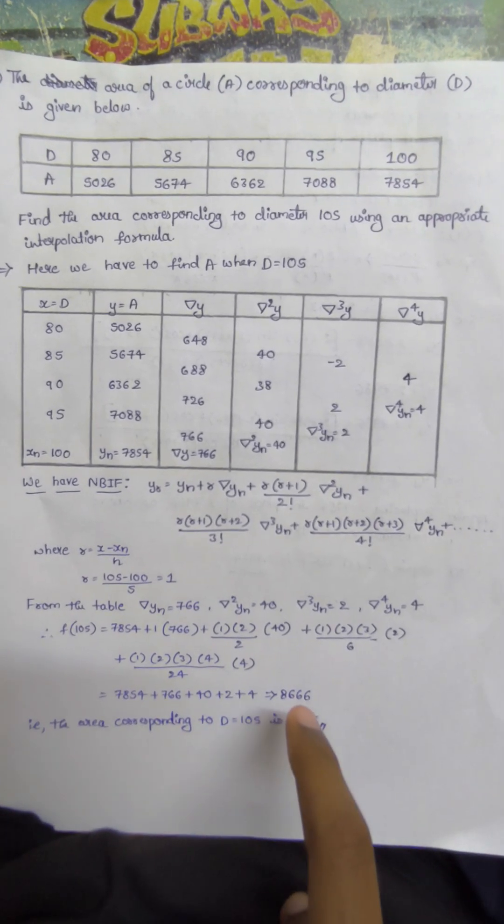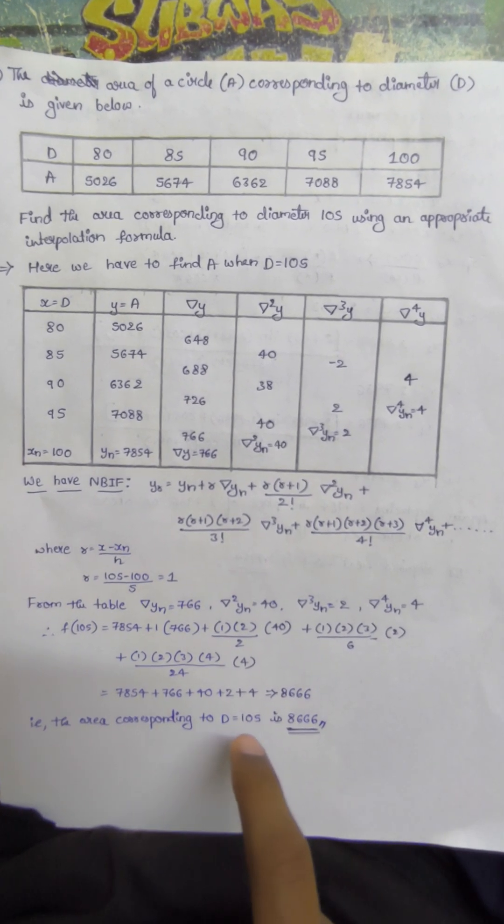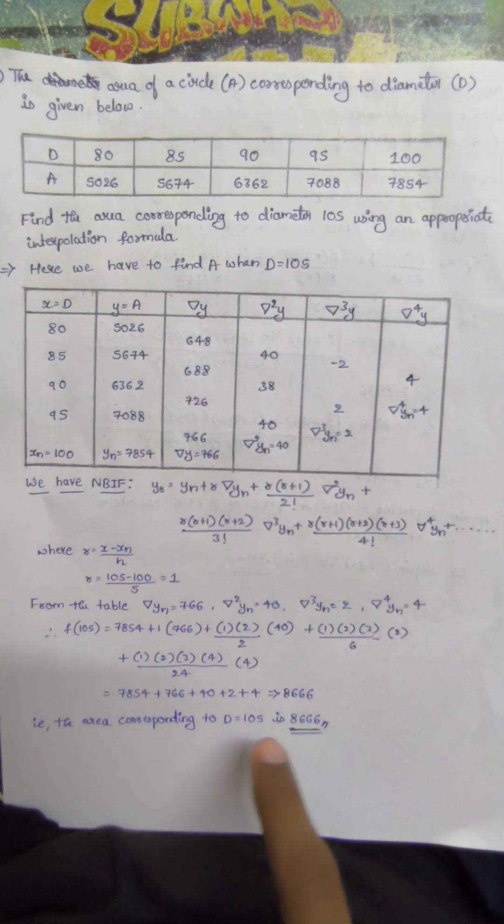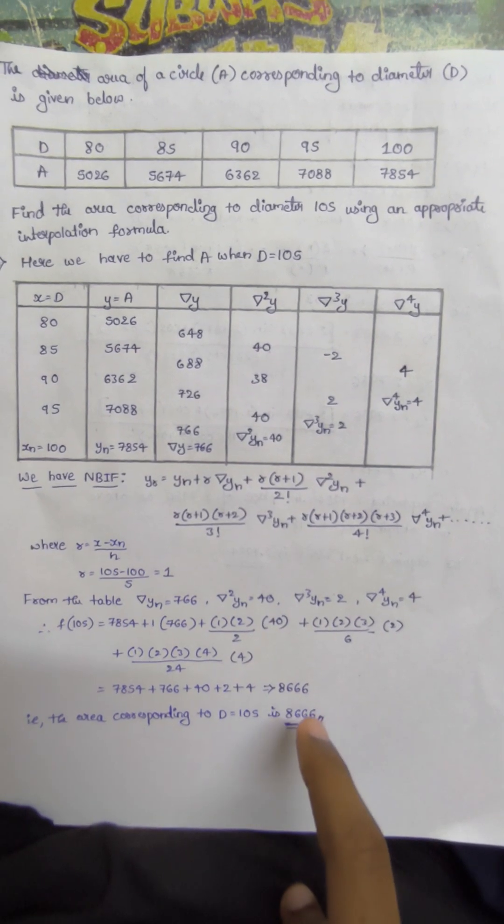Therefore, the area corresponding to D equals 105 is 8316. Thank you.